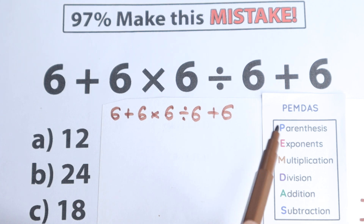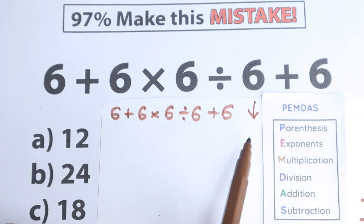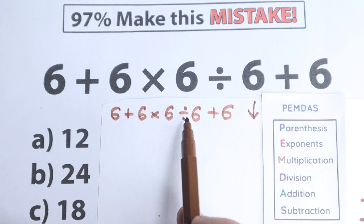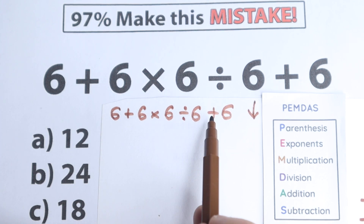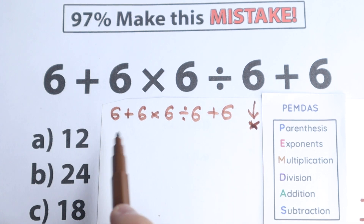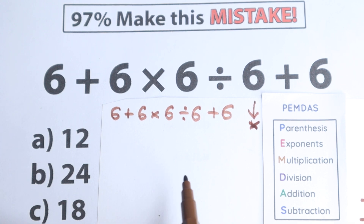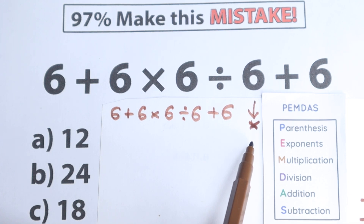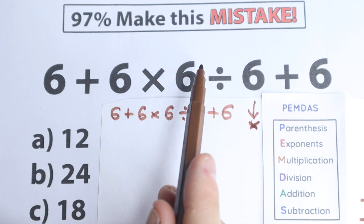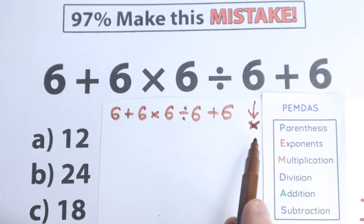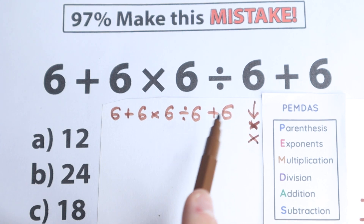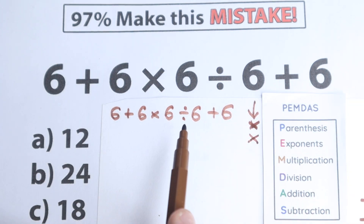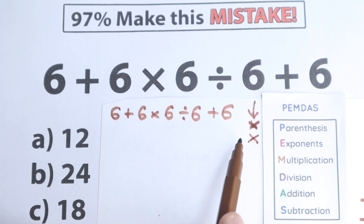Let's solve this according to PEMDAS. This order of operations works from top to bottom. The first step is parentheses — we don't have any parentheses here, so we skip this part. Before I continue, you can pause the video and try to solve it yourself. The next step is exponents — I don't see any squares or cubes, no powers, so we skip this part as well. Parentheses and exponents are the more complicated steps, but we don't have either.